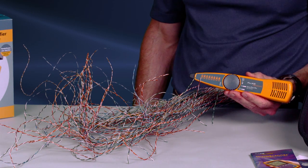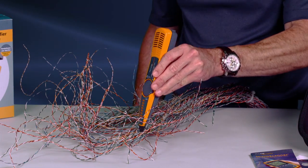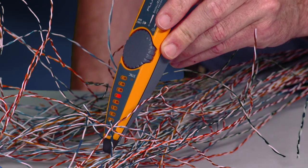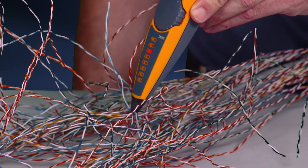We've connected the toner to a random pair in our rat's nest of cabling. It's no problem for the IntelliTone Pro from Fluke Networks. The IntelliTone Pro finds the right wires every time.